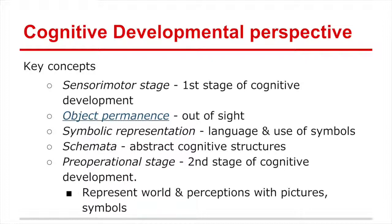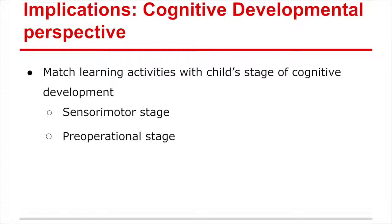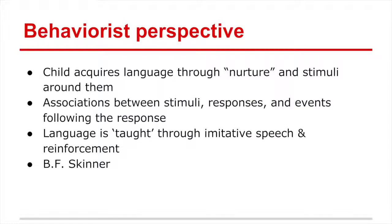We have different stories we tell ourselves to make sense of the world. Cognitive development then goes into the pre-operational stage, where the child really starts to make sense of the world and their perceptions, using symbols and pictures. Cognitive development looks at how language develops over time, just as thought and other cognitive capabilities develop — from the sensorimotor stage moving into the pre-operational. It's the job of the educator to match learning activities with the child's believed state of cognitive ability in terms of language.